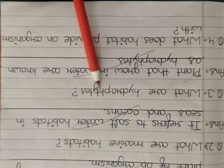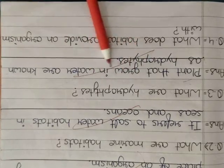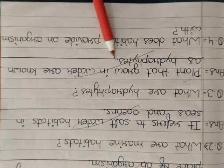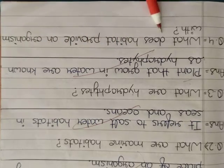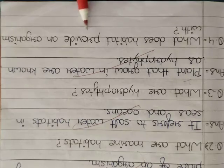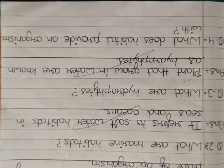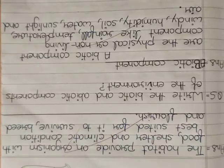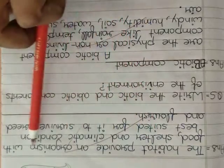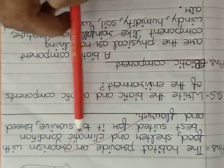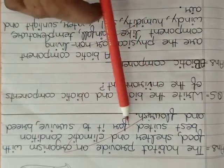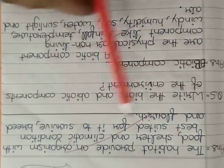Question number third. What are hydrophytes? Plant that grow in water are known as hydrophytes. Question number four. What does habitat provide an organism with? The habitat provide an organism with food, shelter and climatic condition best suited for it to survive, breed and flourish.